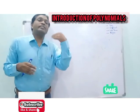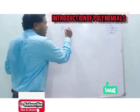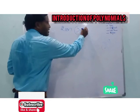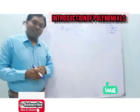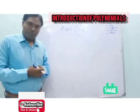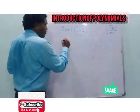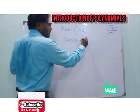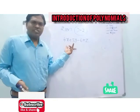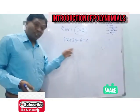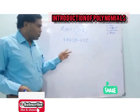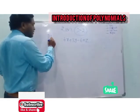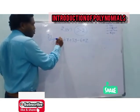Now, if two or more than two terms are there in an expression, let us see what we call it. Take 4x plus 3y minus 6 plus z — this is also an expression, but here we have more than two terms. This is called a polynomial.